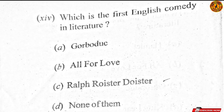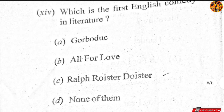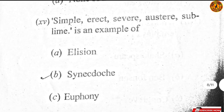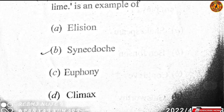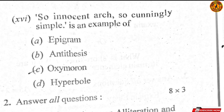Question number 14: which is the first English comedy in literature? That is option C — Ralph Roister Doister. Question number 15: 'simple, erect, severe, austere, sublime' is an example of climax — option D. Question number 16: 'so innocent, arch, so cunningly simple' is an example of oxymoron — option C. So these are the right answers, dear students; now you can correct yourself.